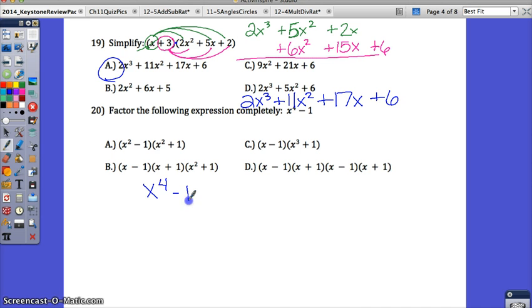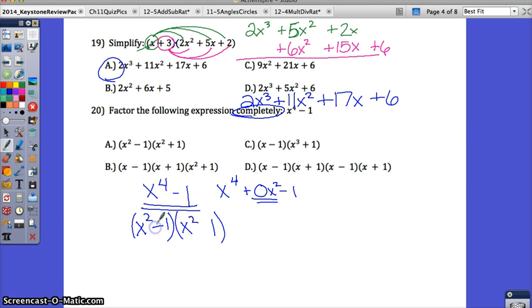We have x⁴ - 1, and we have to factor completely. So x⁴ - 1, this is a difference of two squares. Hopefully you recognize that. x⁴ is a perfect square, and 1 is a perfect square. If you don't recognize it, it may help you to write x⁴ plus 0 in the middle, and then minus 1, or 0x² in the middle, because there's nothing there. But this is a difference of two squares, so break it up. What multiplies to give you x⁴? x² and x². What multiplies to give you 1? 1 and 1. Why is there no middle term? Because the signs are opposite.